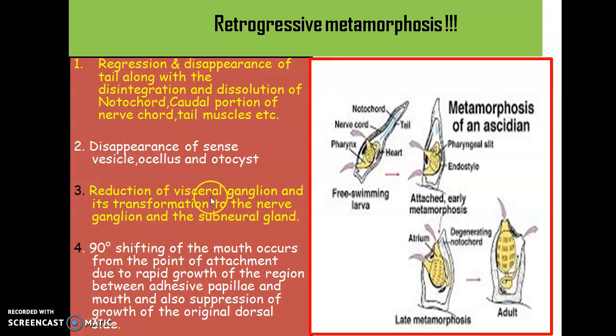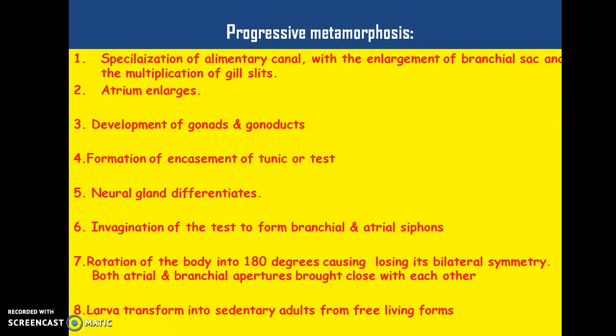So these are the four different changes which generally occur during the process of retrogressive metamorphosis. The next change is progressive metamorphosis, which is quite different from retrogressive metamorphosis. Here new structures or new changes will begin to appear and they are categorized into eight different facts. The first one is the specialization of the alimentary canal with enlargement of the branchial sac and the multiplication of gill slits. The gills begin to multiply and the branchial sac begins to enlarge. The atrium begins to enlarge and there occurs the development of gonads as well as the gonoducts. Then the formation and encasement of the tunic or test, which means the outer body covering made up of tunic or test will begin to develop, and the neural glands begin to differentiate.